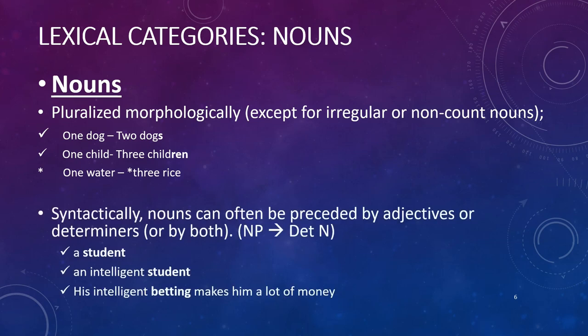Syntactically, nouns can often be preceded by adjectives or determiners, or by both. The noun phrase rule states that a noun phrase breaks into a determiner, adjective, and noun phrase. So the phrase 'the student' — 'student' is preceded by a determiner, meaning student must be a noun. You can also say 'the intelligent student,' and the fact that you can insert an adjective suggests that 'student' is a noun. Nouns can also be abstract or have morphological characteristics making them difficult to identify. For example, in 'his intelligent betting made him a lot of money,' 'betting' is a noun because it can have an adjective before it ('intelligent') and it can trigger morphological agreement on the verb.